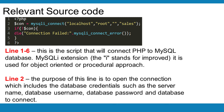Lines 1 to 6: This is the script that will connect PHP to the MySQL database. MySQLi — the 'i' stands for Improved — is used for object-oriented or procedural approach. Line 2: the purpose of this line is to open the connection, which includes the database credentials such as the server name, database username, database password, and database to connect.